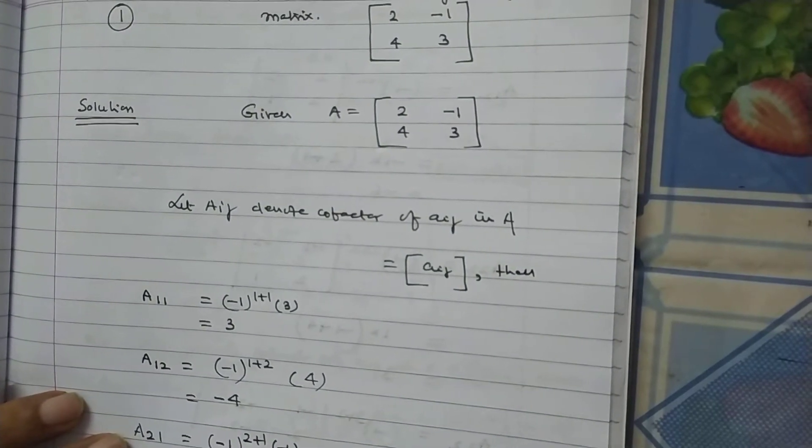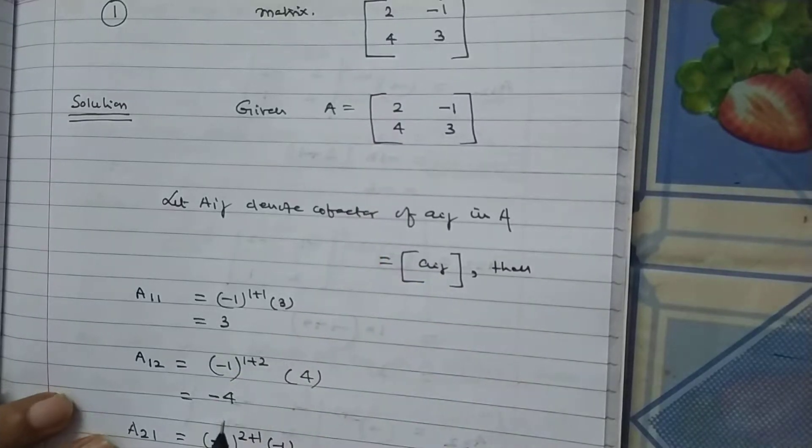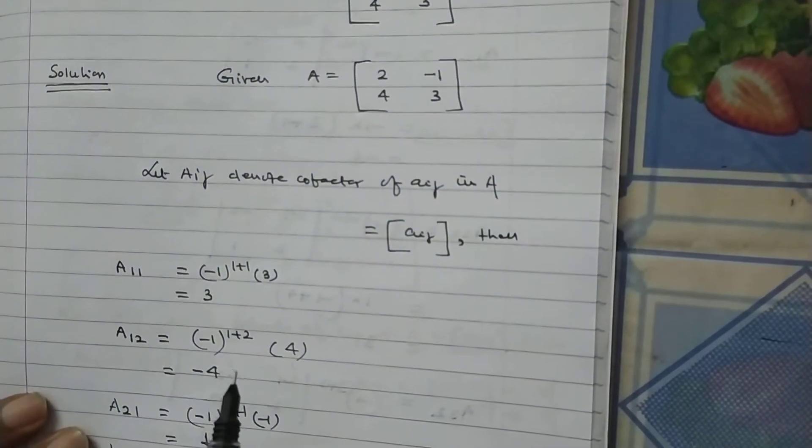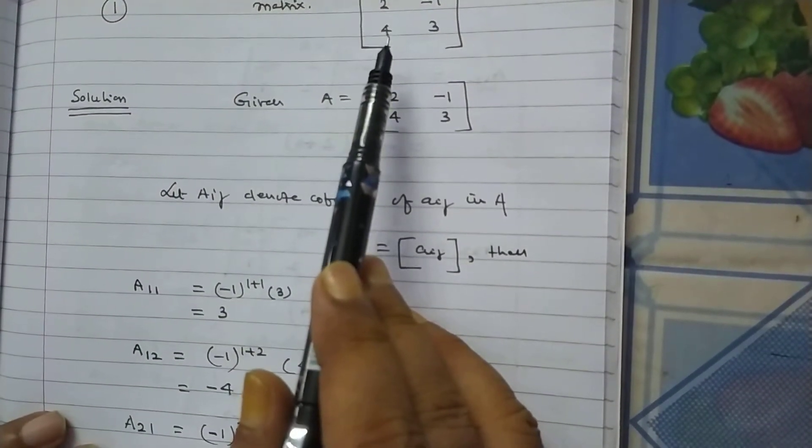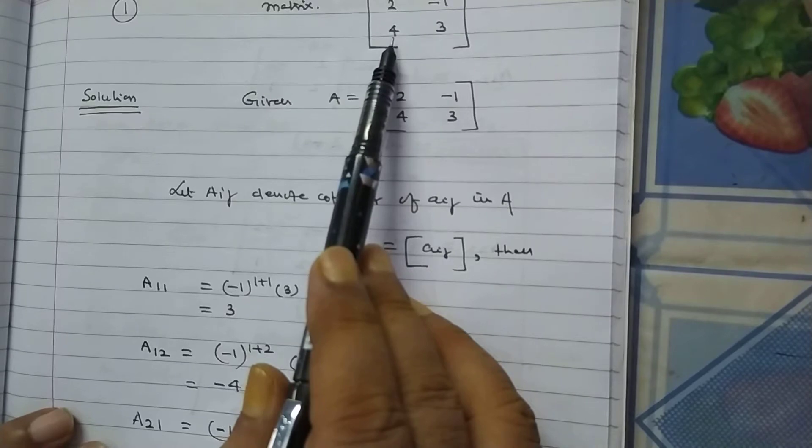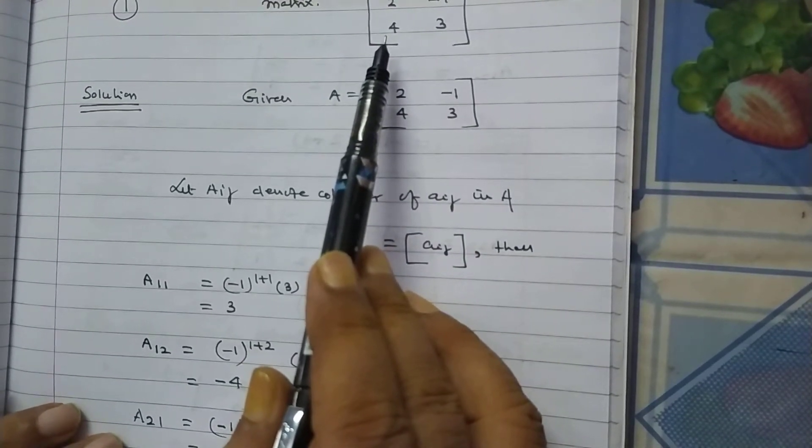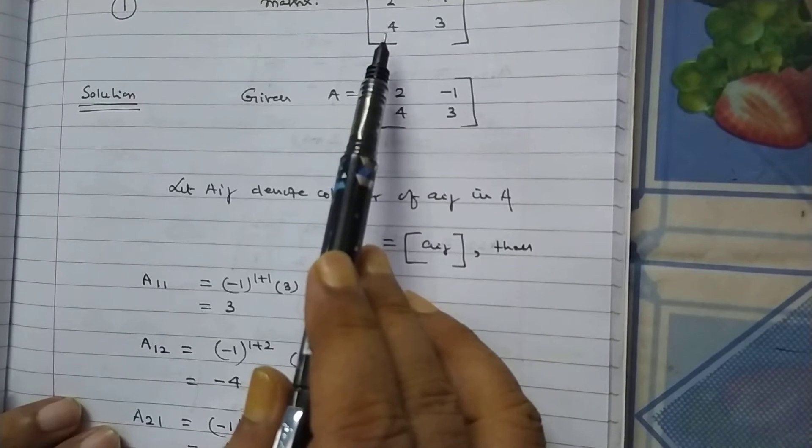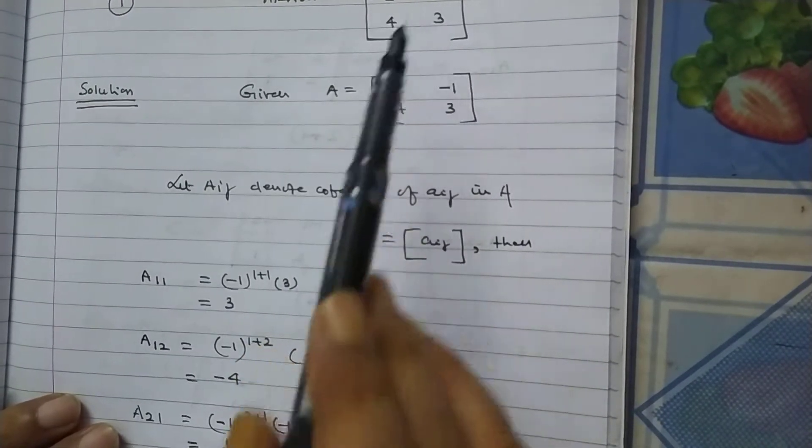Similarly, A21, that is, we want to determine the cofactor of 4. So, it will be how much? You see, here, 4 is at second row and first column. So, it will be minus 1 to the power 2 plus 1 and the remaining element is minus 1.